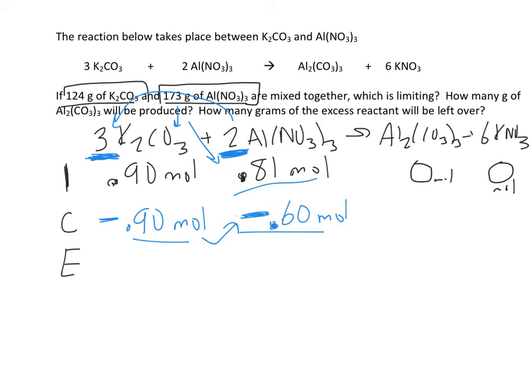Now if the reactants drop, the products are going to go up by a certain amount. And they're going to go up by, again, we're going to look at the coefficients. There's a one in front of this. So if every two of these produces one of these, if this goes down by 0.6, this is going to have to go up by 0.30, half of that amount.